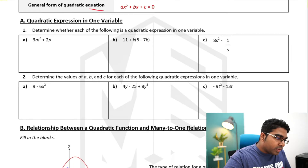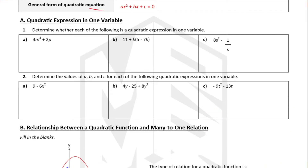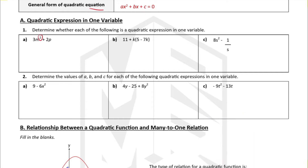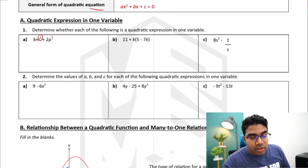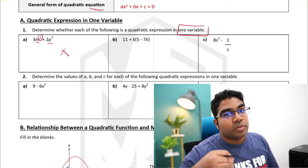Now let's look at how to identify whether an expression is a quadratic expression or not. Looking at the first example, we have m squared and p to the power of 1. The highest power of the variable is 2, which is one of the requirements. However, we have two different variables, so this is not a quadratic expression in one variable.